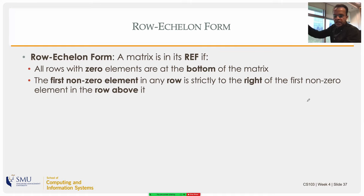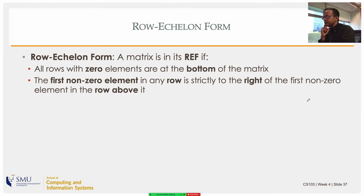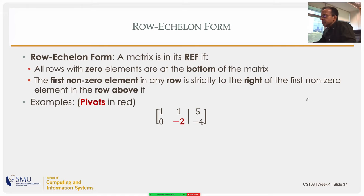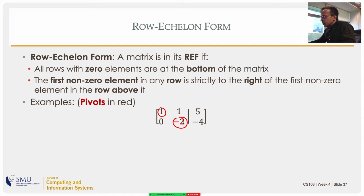In the row echelon form, all rows with only zero elements must be at the bottom, and in each row the first non-zero element must be strictly to the right of the first non-zero element in the row above. This is essentially saying it should be upper triangular. The term 'echelon' is French for stairs or steps — the pivots form a staircase pattern.